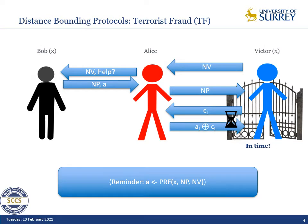The particular threat we are looking at is called terrorist fraud. It's a case where Bob helps an accomplice Alice authenticate to Victor. Victor sends NV, Alice forwards NV to Bob and asks for help, receiving some help — for instance, the vector A as well as the nonce NP — and Alice can forward NP to Victor.